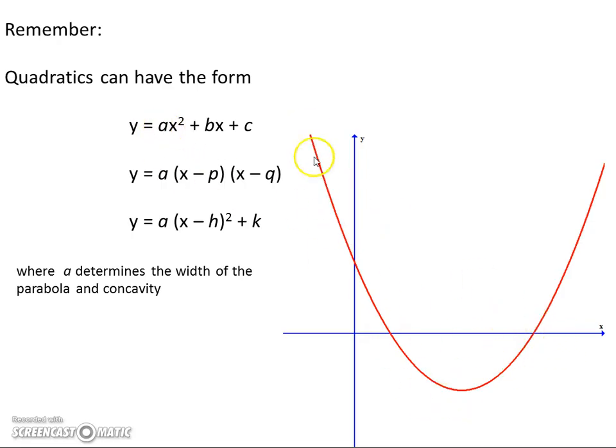If a is a big number it'll be a narrow curve. If it's a small number it'll be a wide curve. If it's positive it'll be u-shaped or concave up. If it's a negative number it'll be the opposite way, n-shaped or concave down.